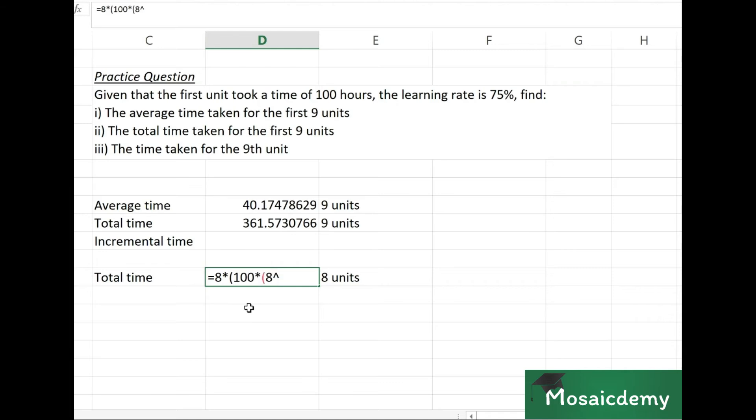8 raised to power log of 0.75 divided by log of 2. If you're wondering why I'm not using simple copy paste of the formula above, I figured it's better to just go through the formula again so it's easier to follow. That gives us a total time for 8 units: 337.5.